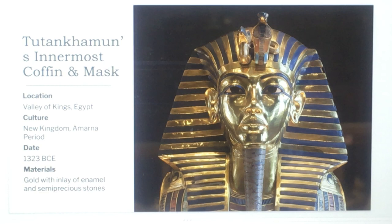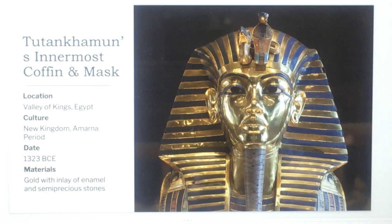Tutankhamun's innermost coffin and mask are from the Valley of the Kings in Egypt, New Kingdom, Amarna period, 1323 BCE. They are made of gold with inlay of enamel and semi-precious stones.